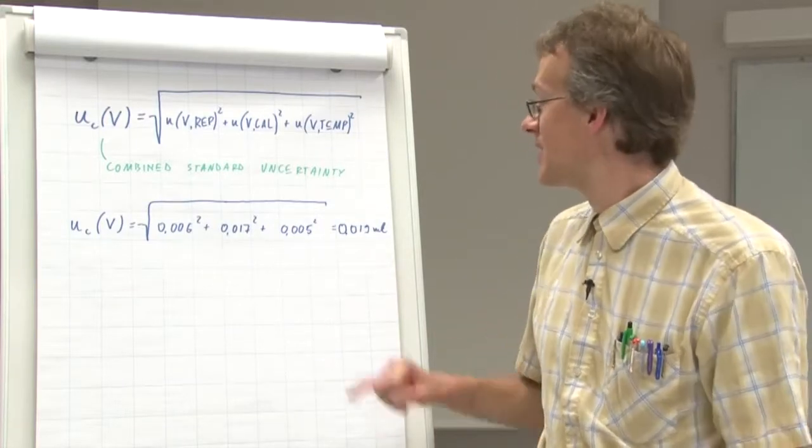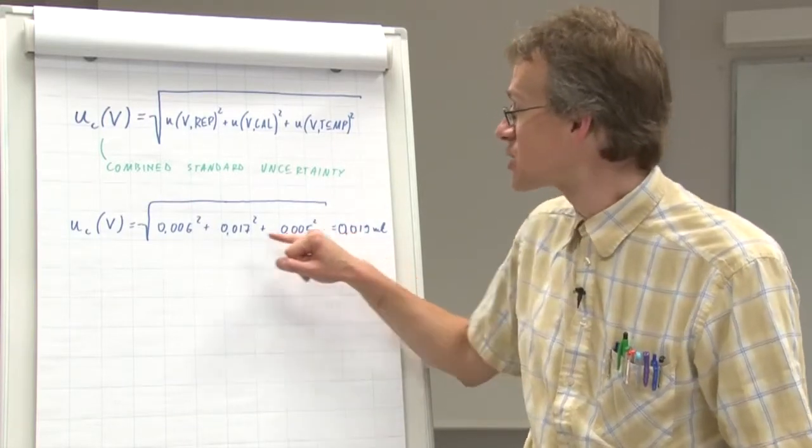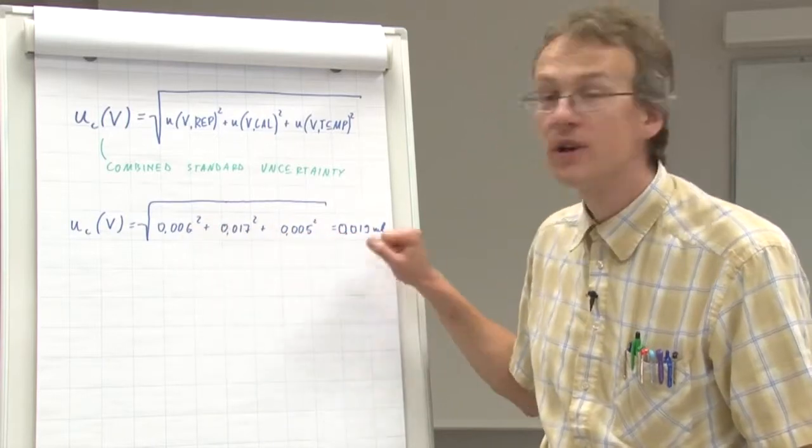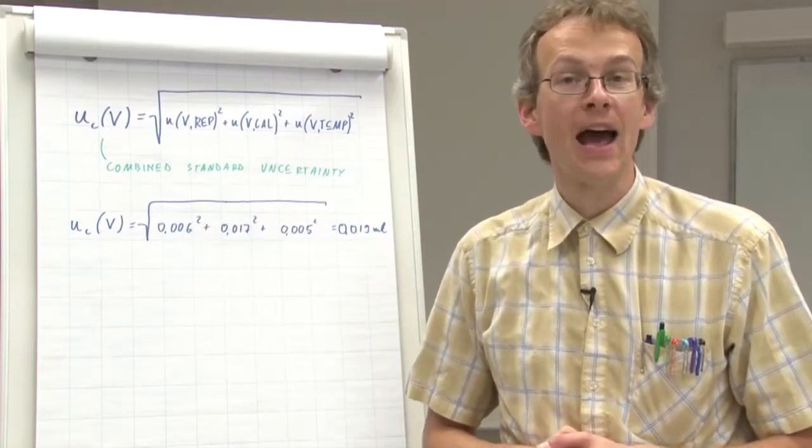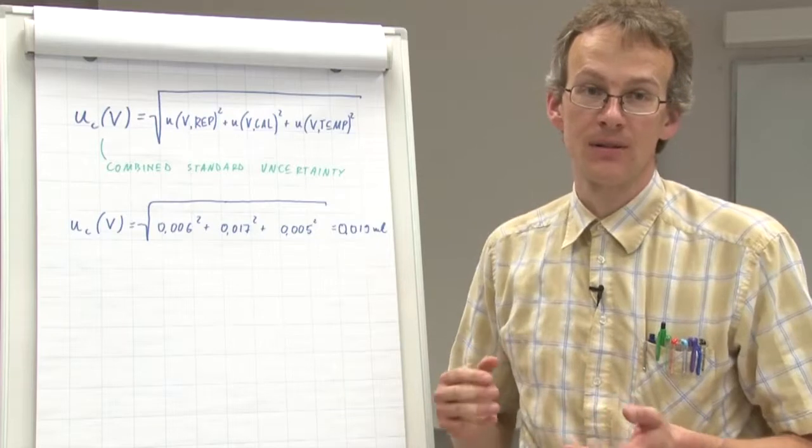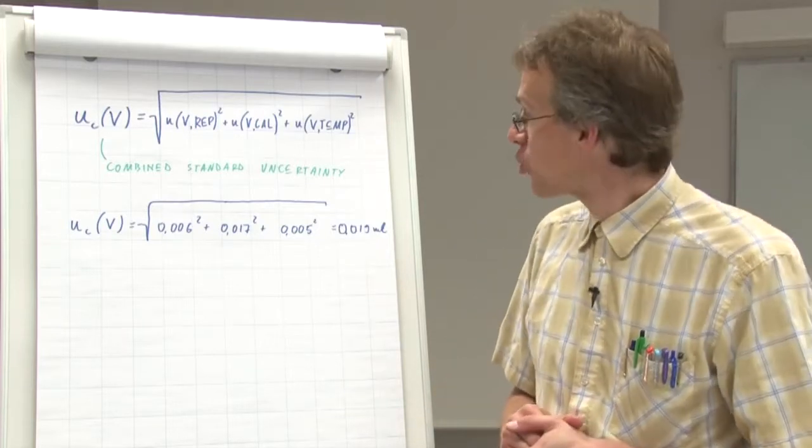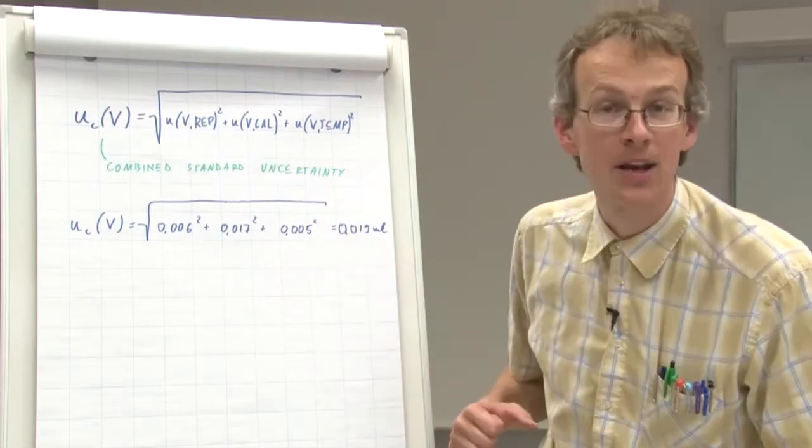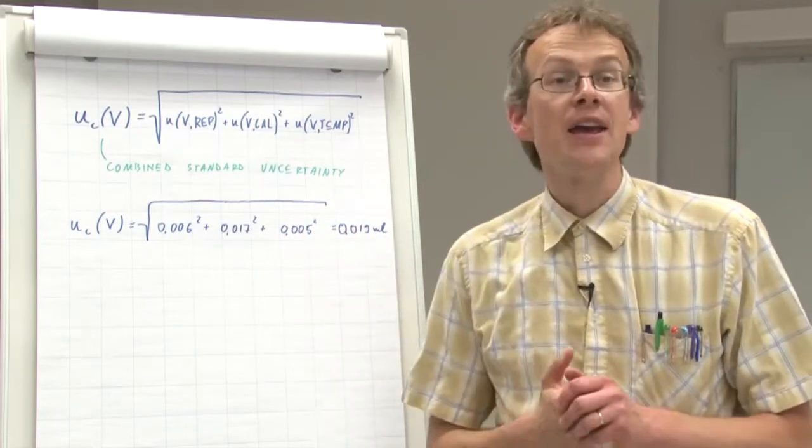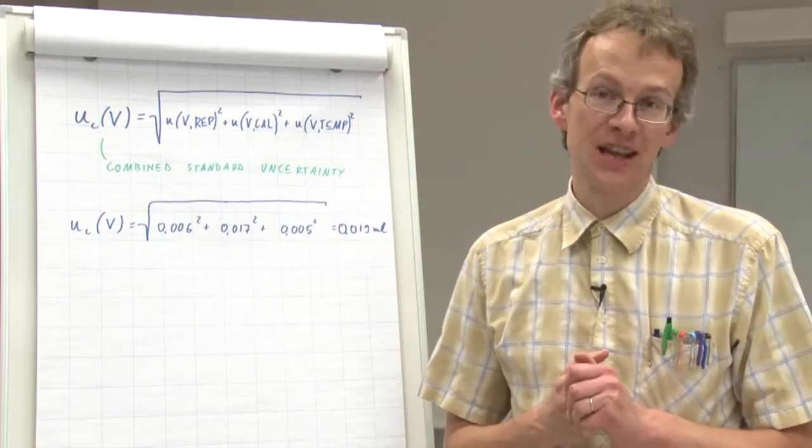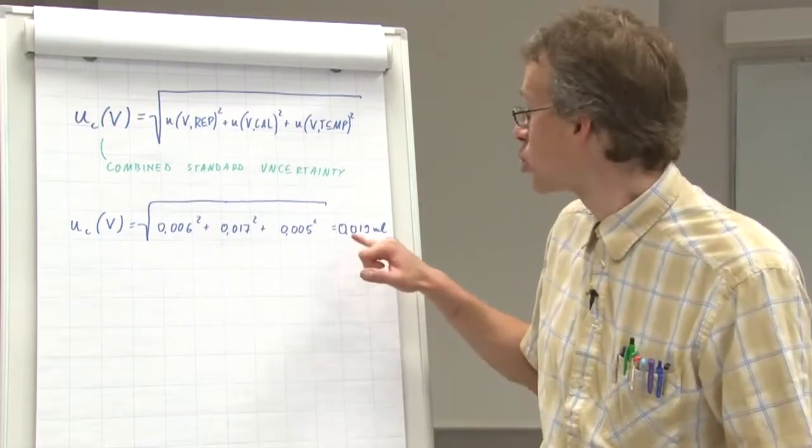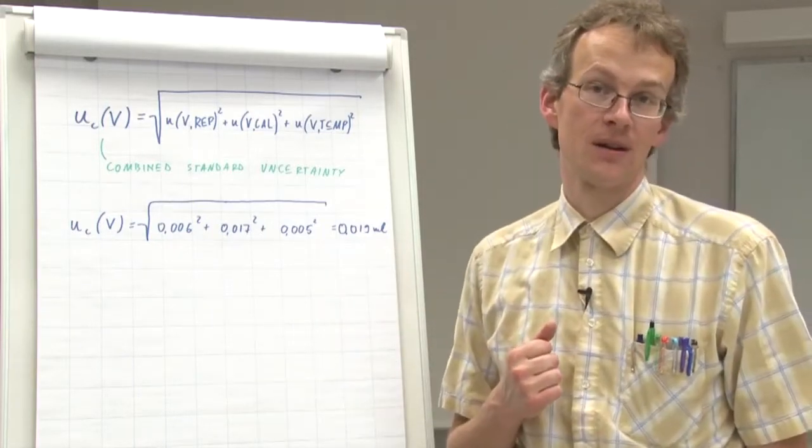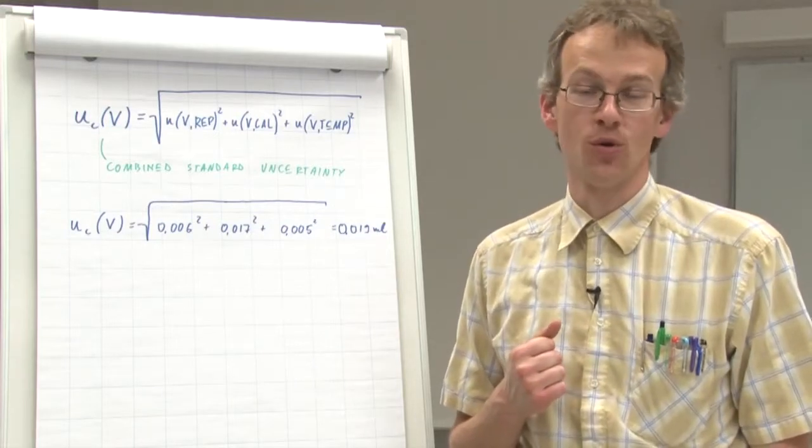if there are some very small uncertainty components, they wouldn't even have any influence at all. So suppose we would have some 0.001 milliliter uncertainty components here. It would be fairly safe to neglect them because they wouldn't influence the combined standard uncertainty at all.